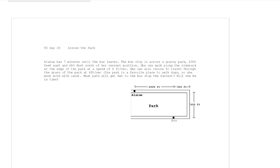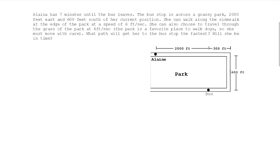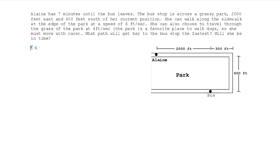She has seven minutes to catch her bus. Let's look at all our options — the extremes — and see if we can apply what we know about minimizing. First, let's remember that rate times time equals distance, so time equals distance over rate. If she just stays on the sidewalk, how long is it going to take her?